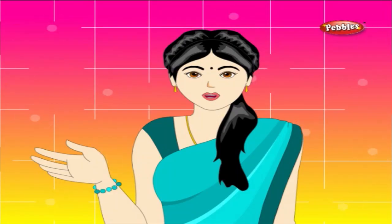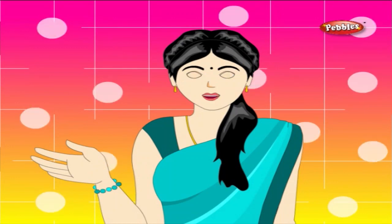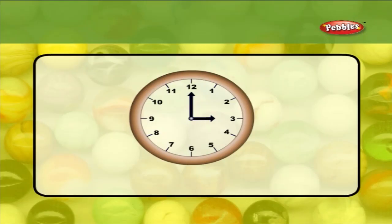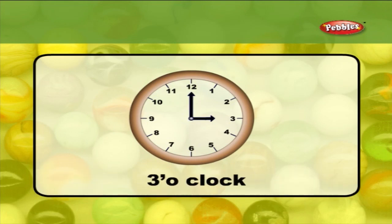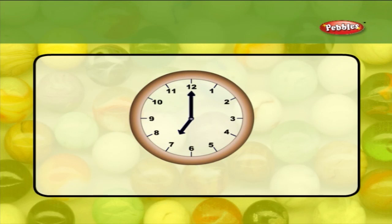Let us learn with the help of some examples. In the first clock, the short hand points to 3 and the long hand points to 12. Therefore, the time is 3 o'clock. In the second clock, the short hand points towards 7 and the long hand points towards 12. Here the time is 7 o'clock.